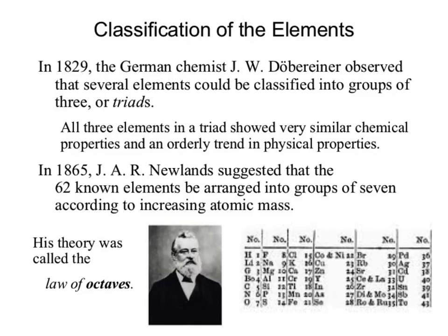It turns out it's not perfect. A little bit later, we get Newlands coming through, and now we have 62 elements, and he groups them according to sevens, according to increasing atomic mass. So he says group one has these characteristics, group two these, group three these — roughly grouped according to their atomic mass. Notice it says groups of seven.